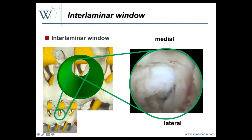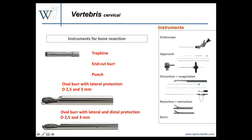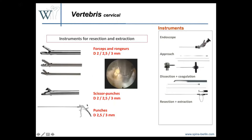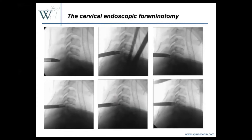We can release and remove the disc herniation with nice instruments. I usually start with an oval burr drill, then we can also use diamond ball drills — really the same instruments used in microscopic disc surgery but smaller. We also have rongeurs and punch forceps, very small instruments that allow us to minimize the approach. At the beginning we use more X-ray to see where we are and control our instruments; with more experience we use fewer X-rays, just to verify the level.